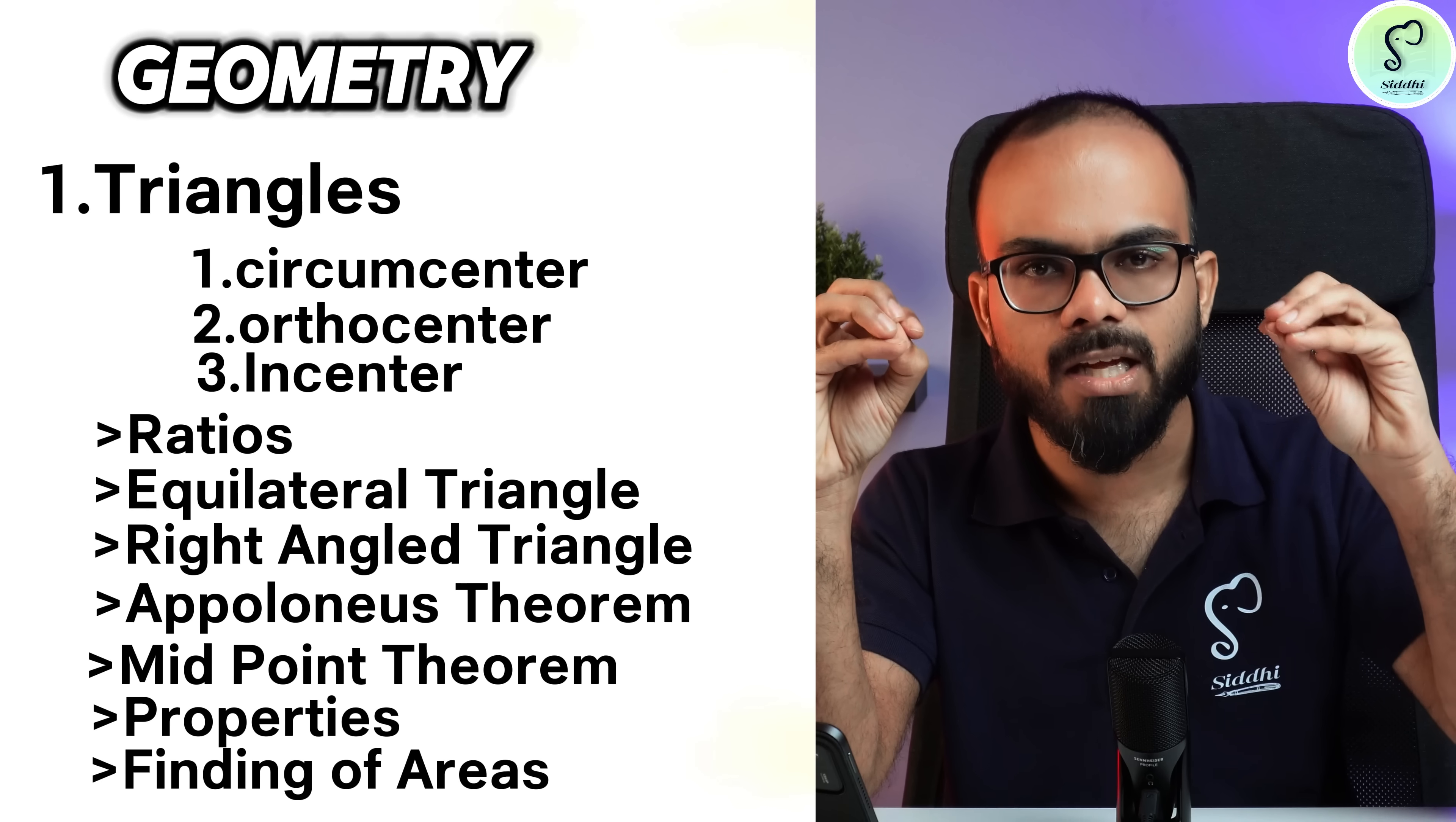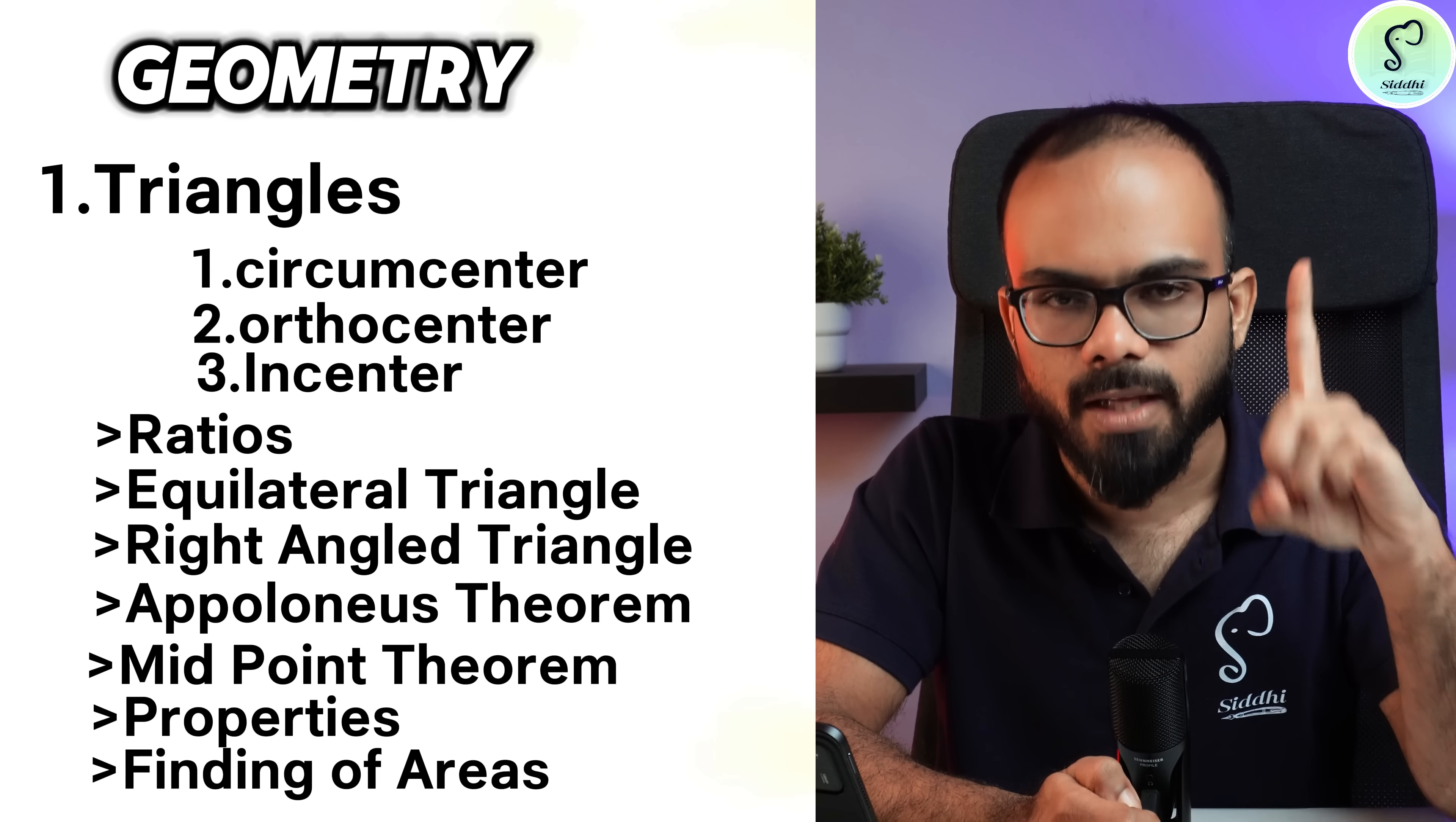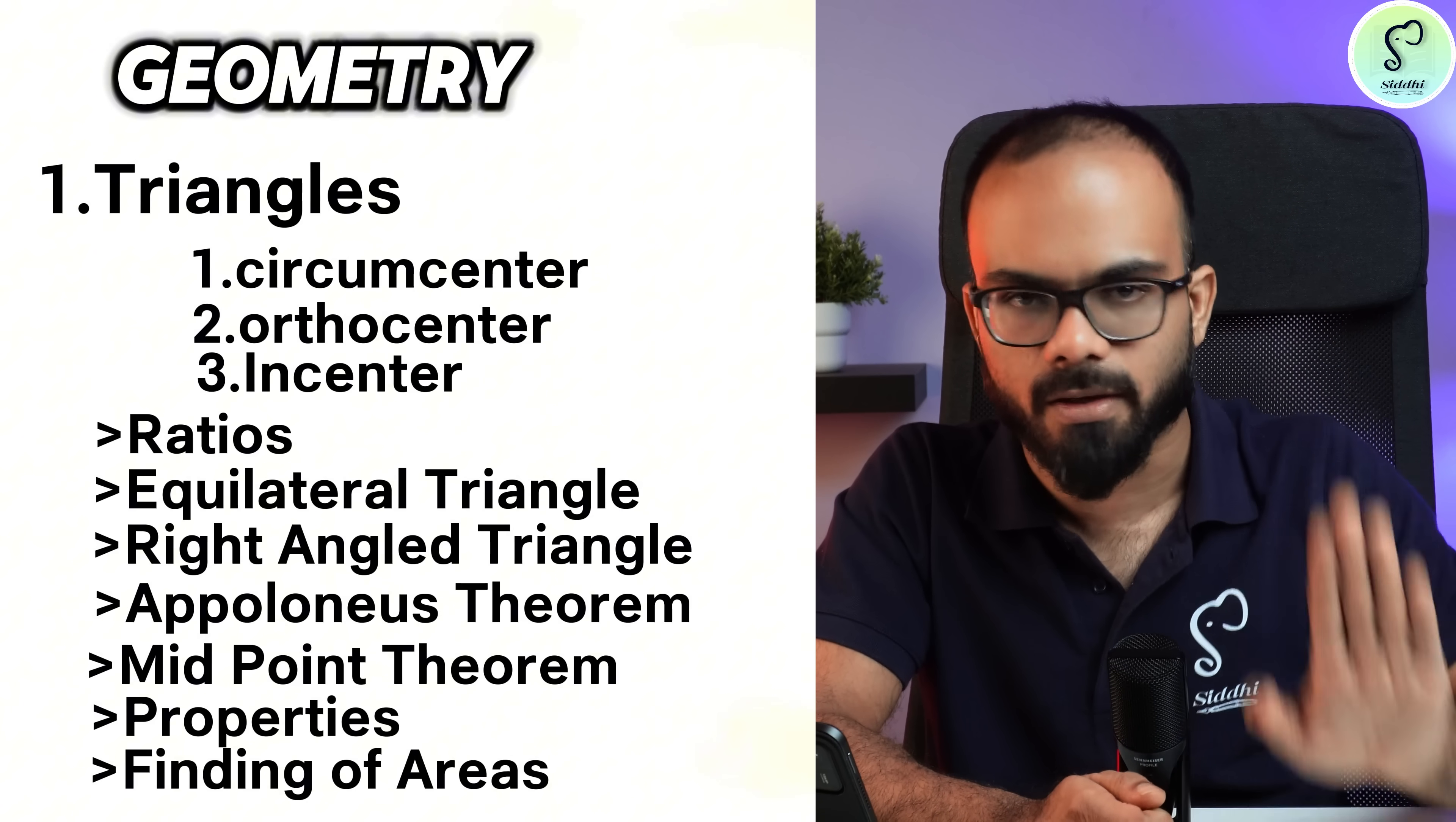Along with that, finding of areas: s is equal to square root of s into s minus a into s minus b into s minus c, that is Heron's formula. Then formulas such as small r equals delta by s, capital R equals abc by 4 delta, and all these area-related formulas are extremely important in triangles.